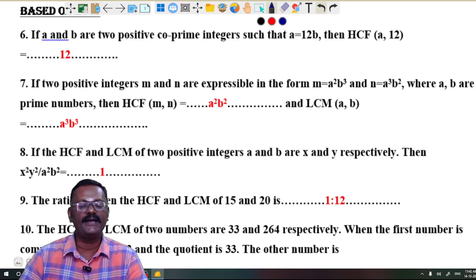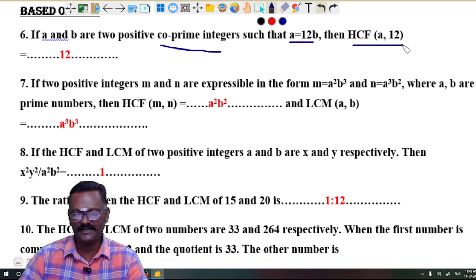Question 6: If a and b are two positive co-prime integers such that a = 12b, then HCF(a, 12) - the HCF is 12.